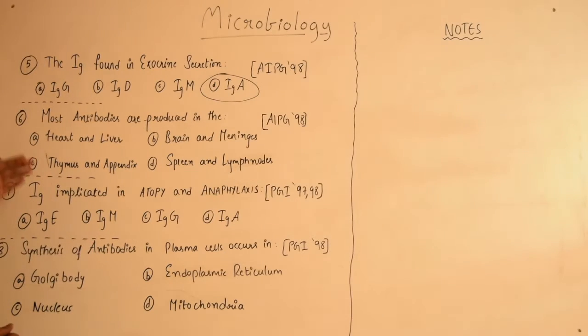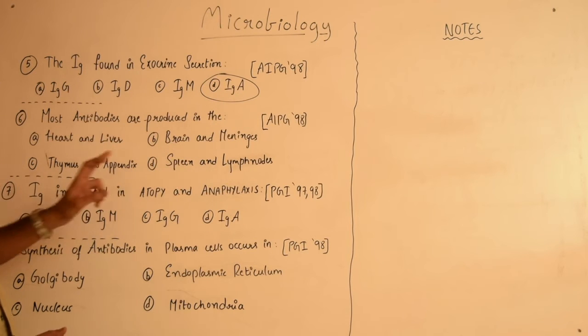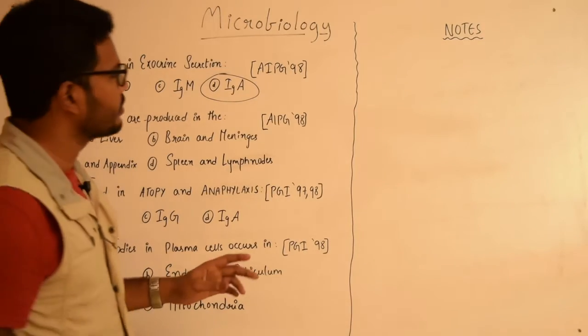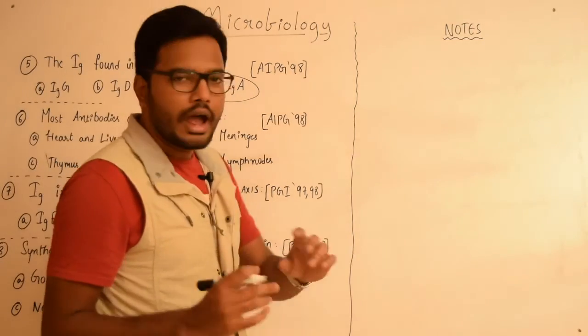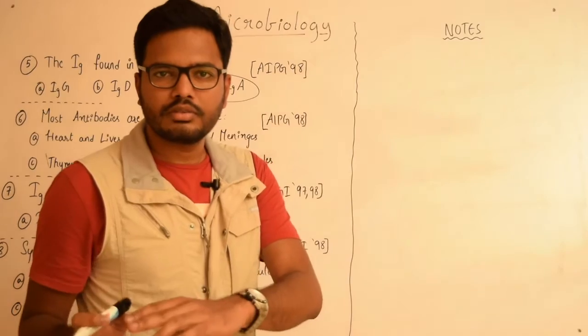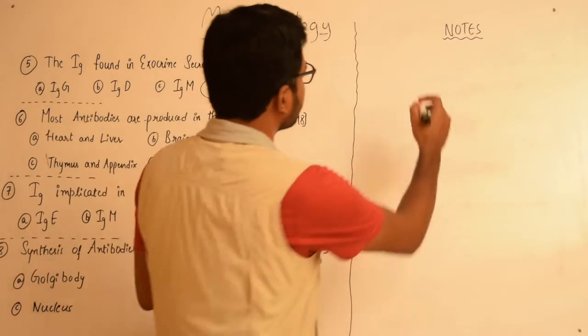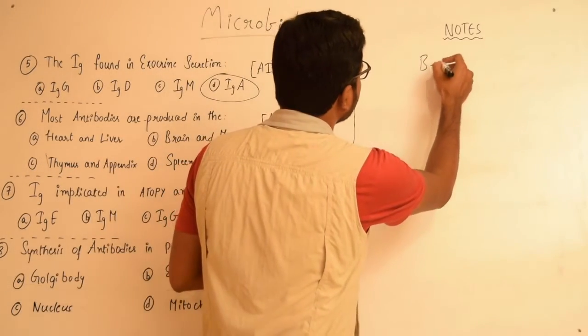Now moving on to the next question: most antibodies are produced in heart and liver, brain and meninges, thymus and appendix, or spleen and lymph nodes? Usually antibodies are produced by plasma cells which differentiate from B lymphocytes, so we have B lymphocytes...